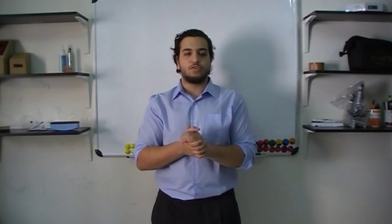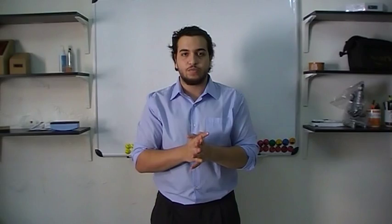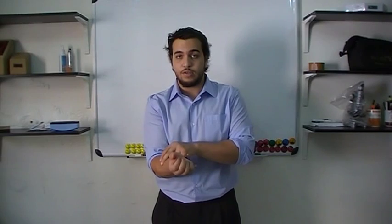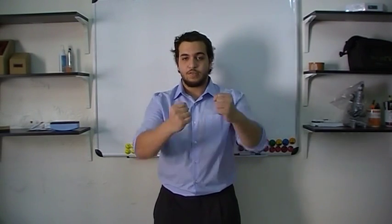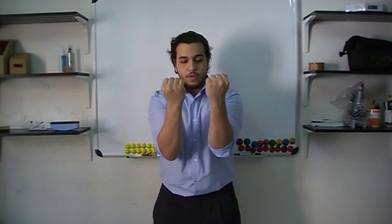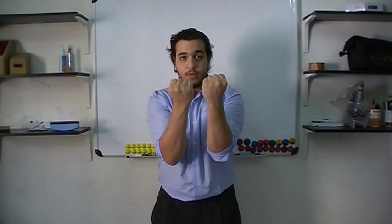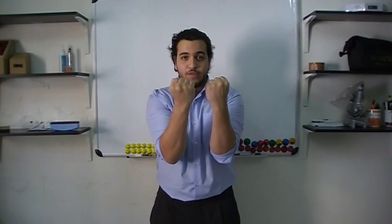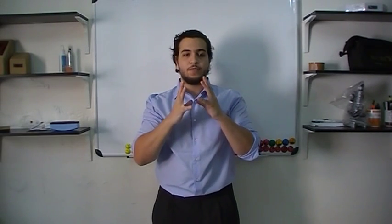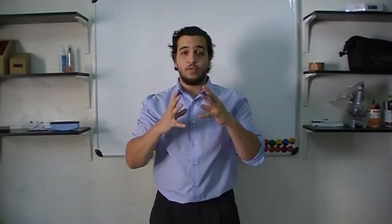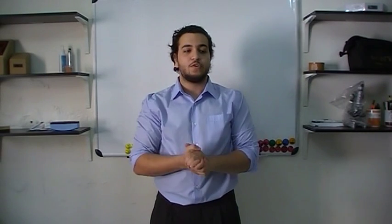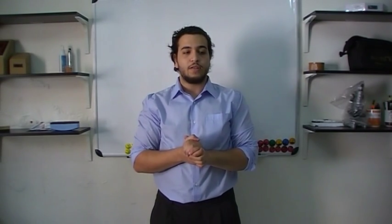We also have the interosseous membrane of the forearm. The interosseous membrane is located between the ulna and the radius — it is a fibrous tissue that holds them together and prevents sudden movements that could cause injuries. That is its main function and why it is present.